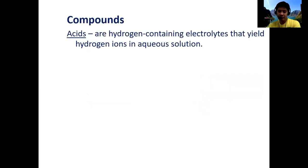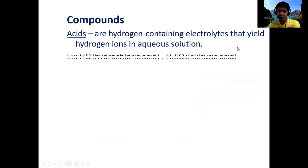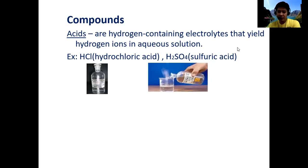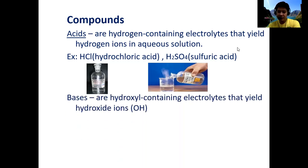Acids are hydrogen-containing electrolytes that yield hydrogen ions in aqueous solution — meaning when dissolved in water, they produce hydrogen ions (H⁺). For example, hydrochloric acid (HCl) is a binary acid and sulfuric acid (H₂SO₄) is a ternary acid. In chemical formulas for acids, hydrogen is always listed as the first element.